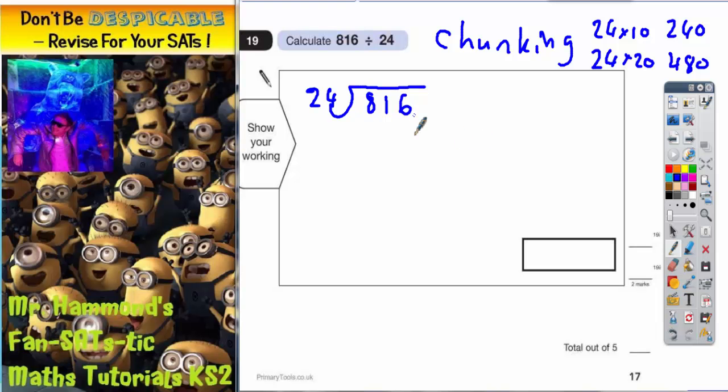So from 816 we could actually take 20 lots, so at the side just write what you're taking, so we're going to take 20 lots. Now we've already just said here that 20 lots of 24 is 480, so I need to subtract 480 to see what I'm left with. Okay, so 6 take away nothing is 6, 1 take away 8 I can't do so I borrow one but that makes 11, 11 take away 8 is 3, 7 take away 4 is 3, so I'm down to 336.